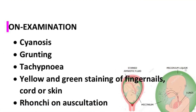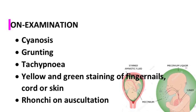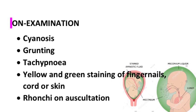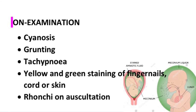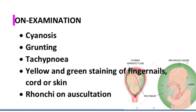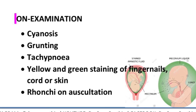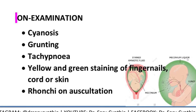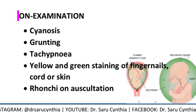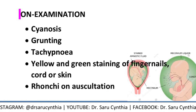On examination, the baby will definitely be cyanosed. You can find cyanosis, grunting, and the baby might be tachypneic. The telltale signs include yellow and green staining of the fingernails, cord, or skin, or even around the nasal area. You might also find bronchi on auscultation.